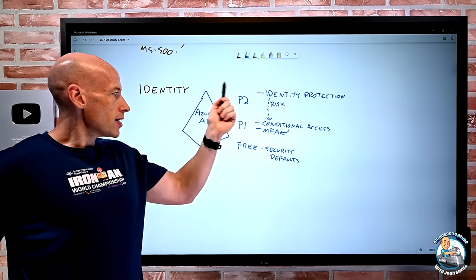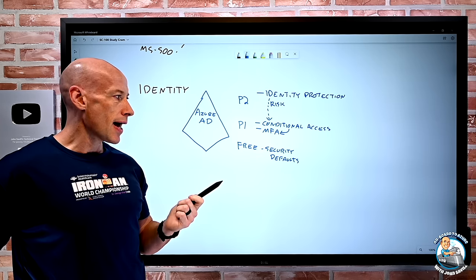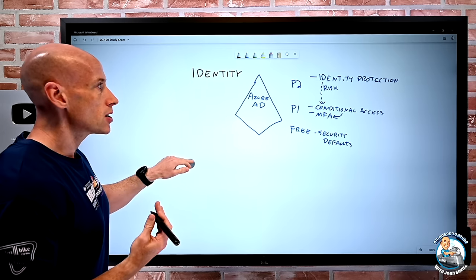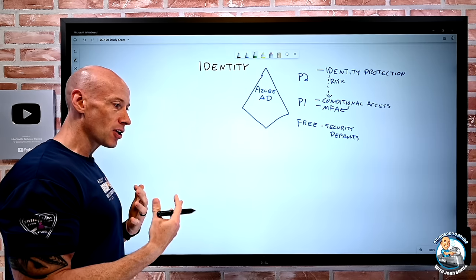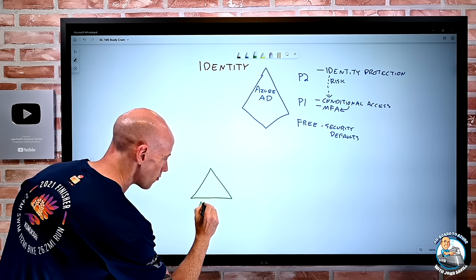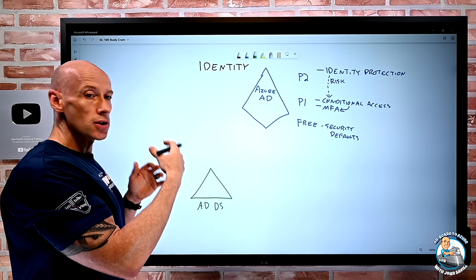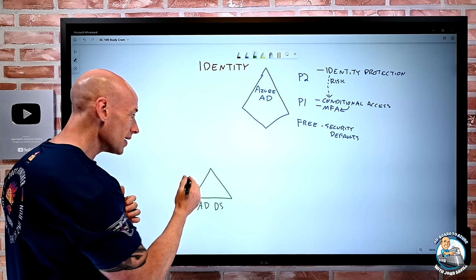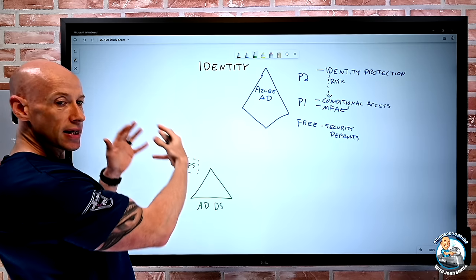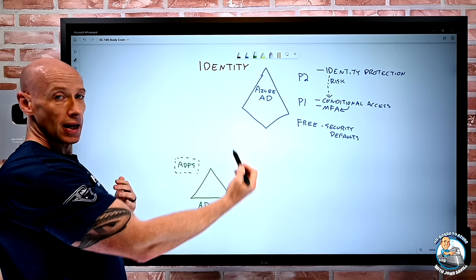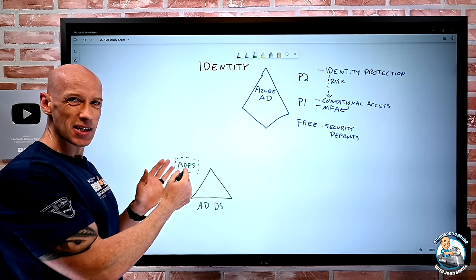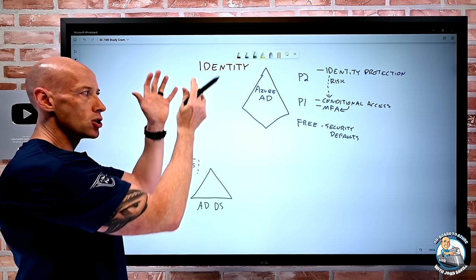When thinking about identity protection, realize that identity doesn't just exist in the cloud. For most organizations, we have an existing Active Directory Domain Services with users, groups, machines joined to it. We may optionally have ADFS — Active Directory Federation Services — where we're federating authentication and authorization from other cloud services to use our on-premises identities. We can even federate from Azure AD to AD via ADFS, but that's generally not recommended; it's better to use conditional access and cloud-based authentication.